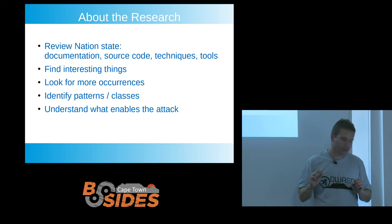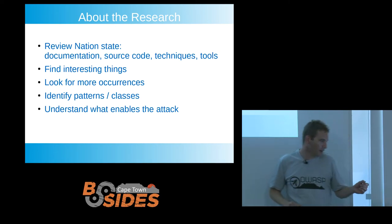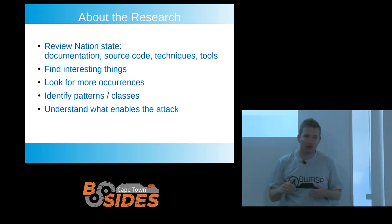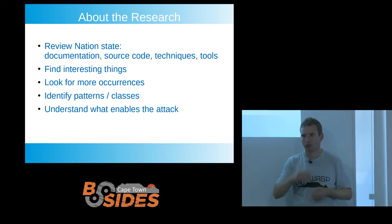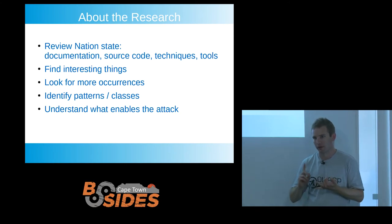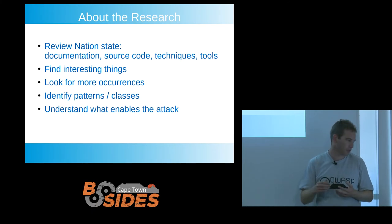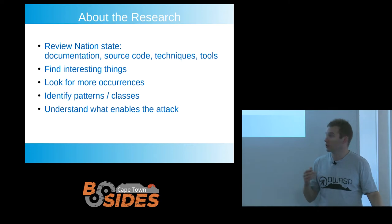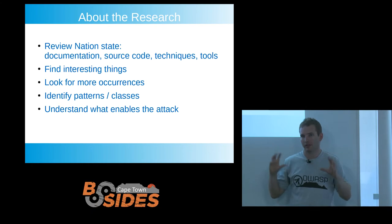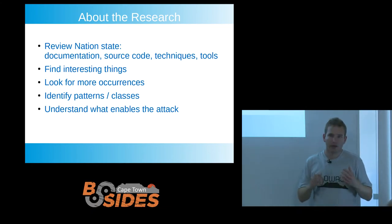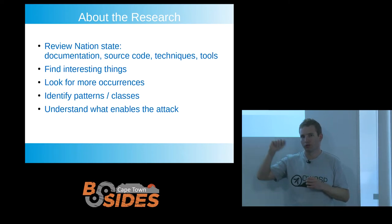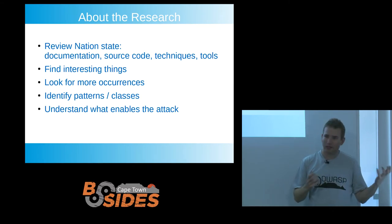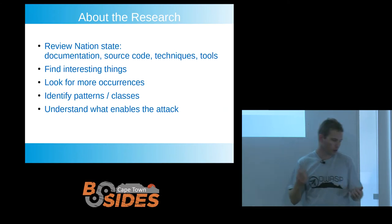I'll try and fly through this because there's a lot of stuff to go through. So what is the research about? I looked at a whole bunch of nation-state documentation, source code, and the techniques and tools described in there — actual tools that were released. This is coming from things like the Shadow Brokers who dumped stuff, WikiLeaks, and Snowden. It's a bit biased towards the Americans because it's their information that got leaked. The idea was to find interesting things within that large body of information, look for multiple occurrences to pick out the patterns, understand what's enabling the attack, and from there start to do more useful things like defend against it.